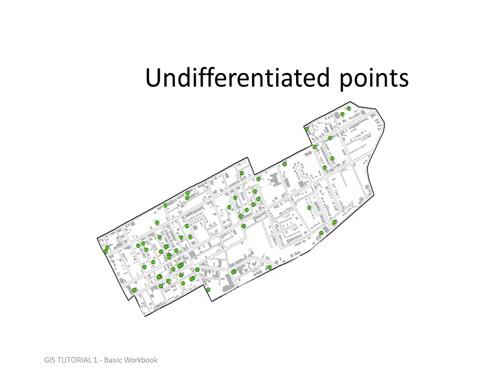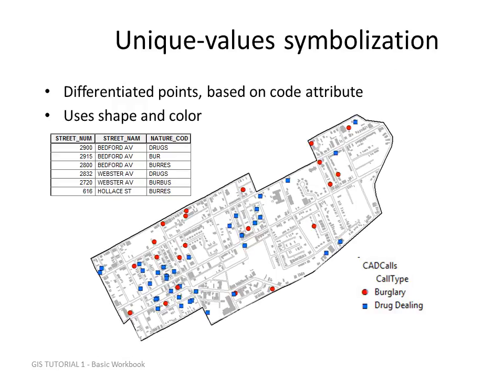Here are undifferentiated points. Here are unique values that have been assigned to points — in other words, we're categorizing them. They've been classified into burglaries or drug deals, and each one is assigned a different symbol.